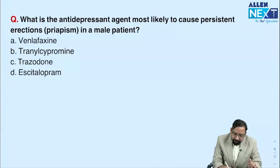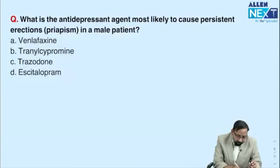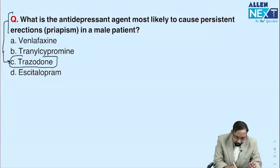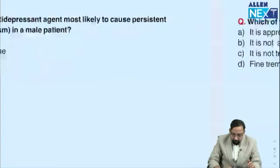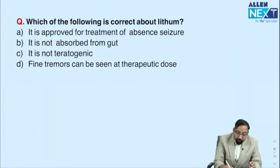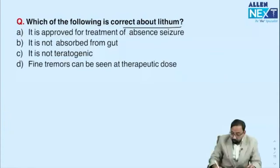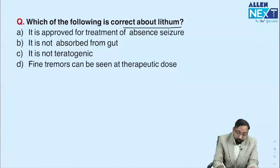What is the antidepressant agent most likely to cause priapism? That is again a repeat question from pharmacology/psychiatry — the answer is trazodone. Moving to lithium, which has always been a high-yield topic.